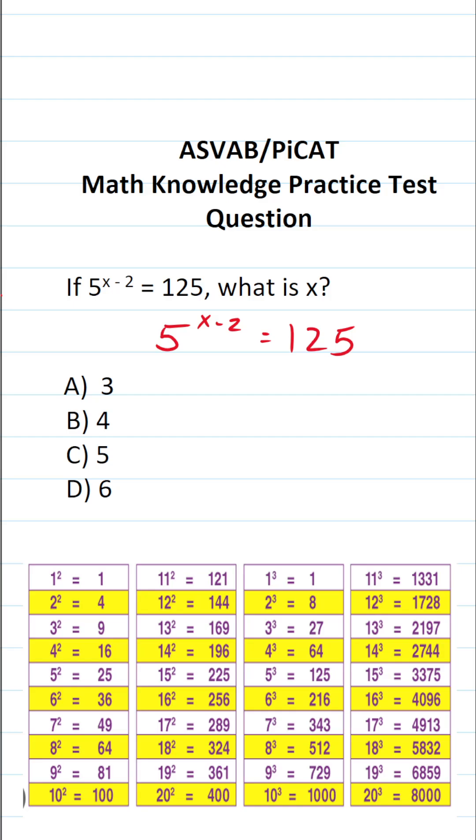In order to solve this equation for x, you first have to realize that we can rewrite 125. More specifically, we can rewrite 125 to be 5 to the third power.